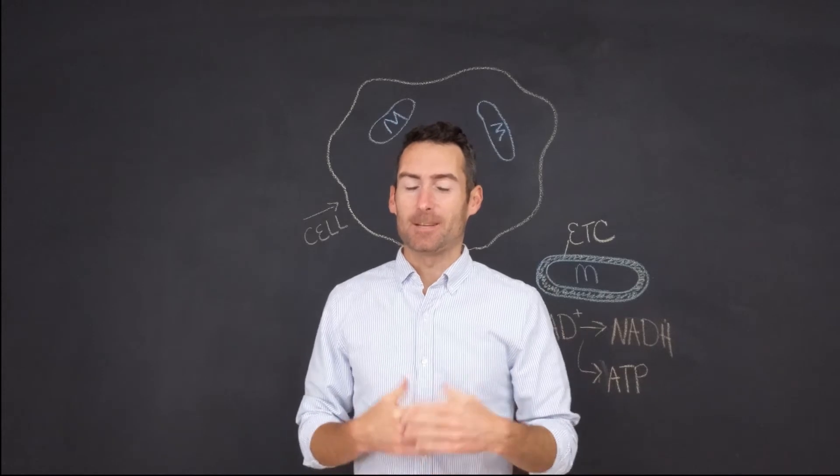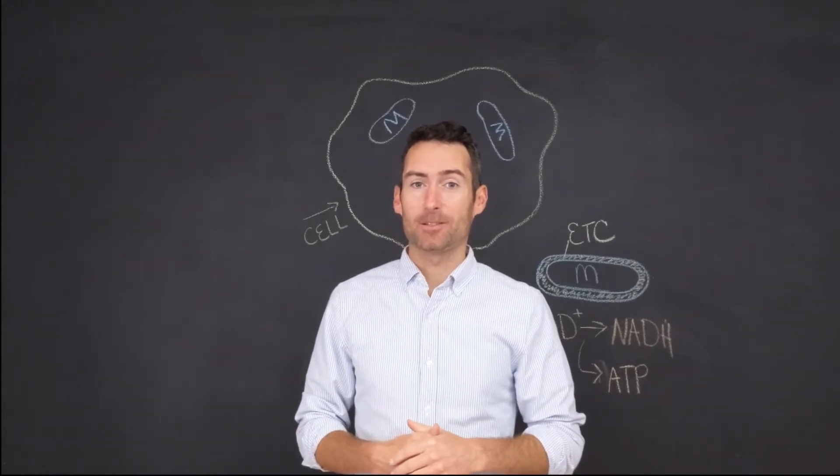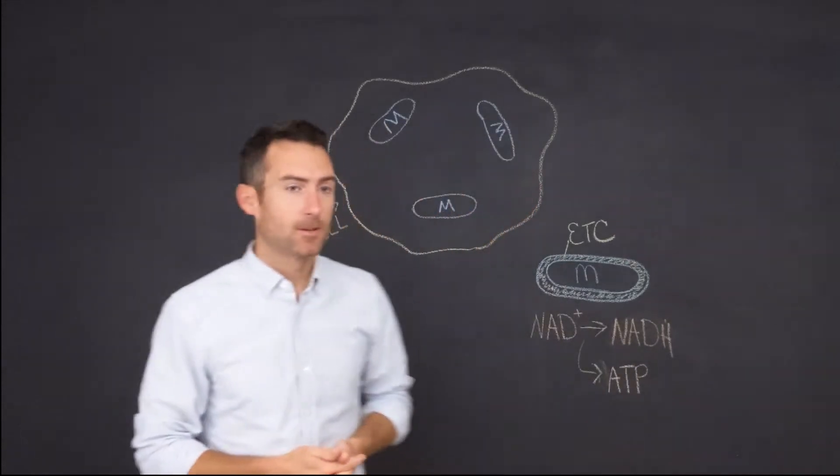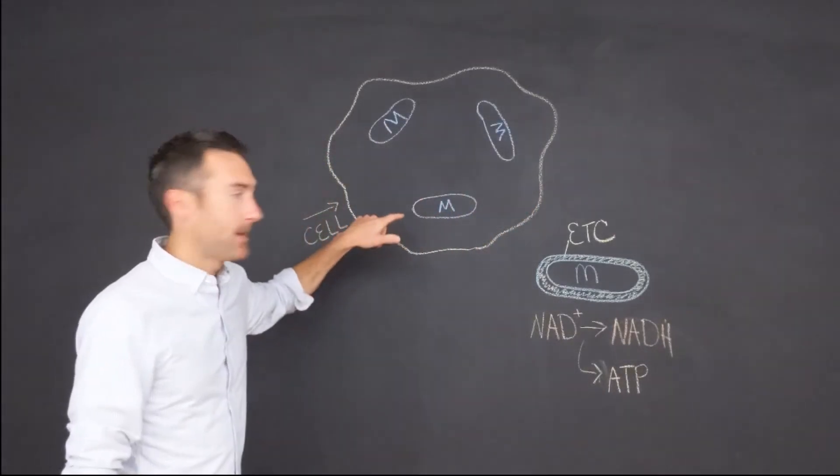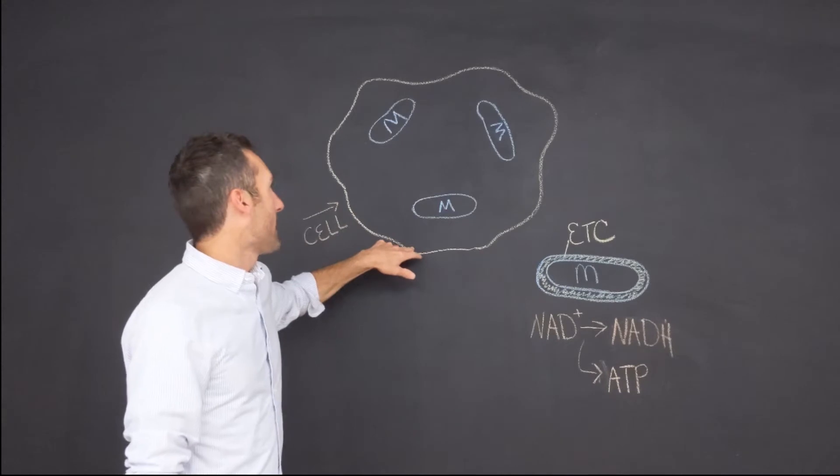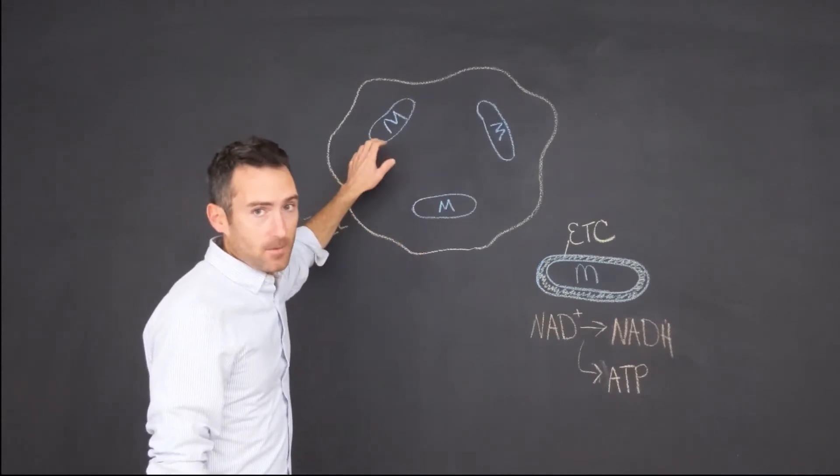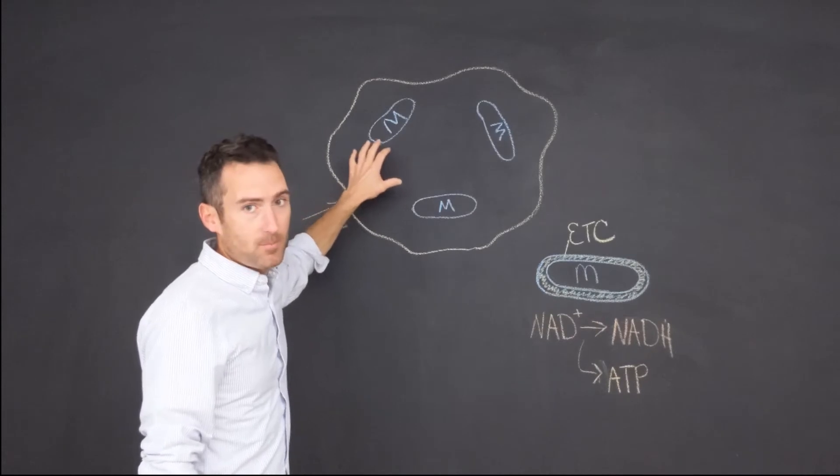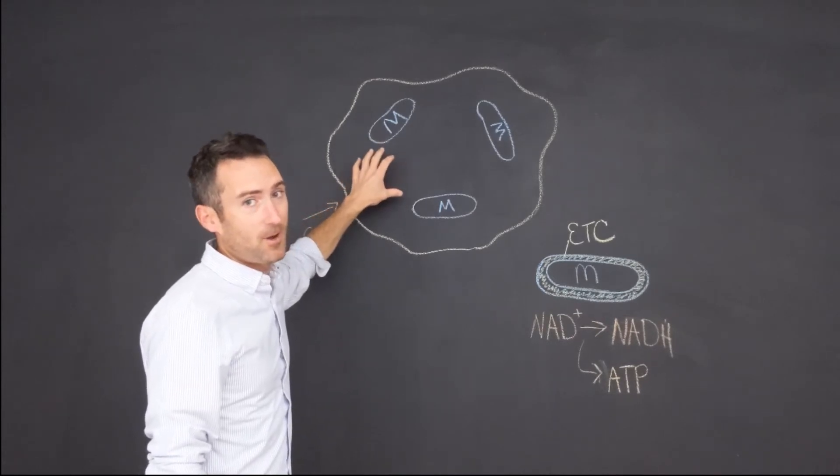NAD matters a lot because cells need NAD to produce energy. So right here is a cell, and inside of that cell is the mitochondria. It's a common misconception, but there are a lot of mitochondria.